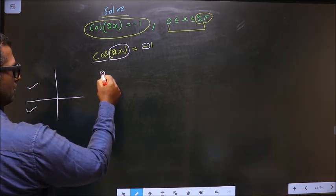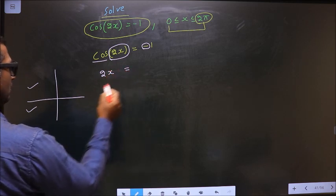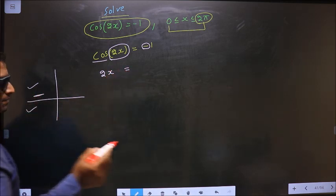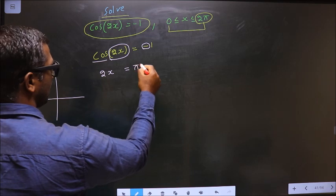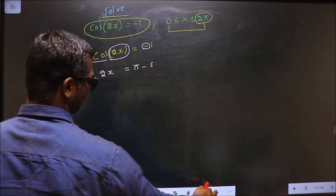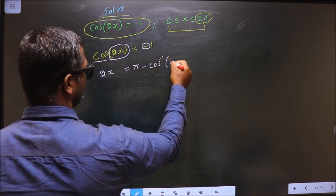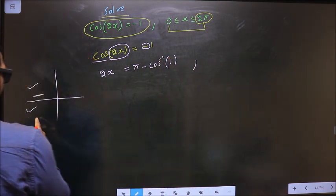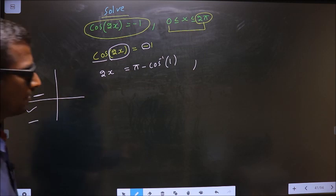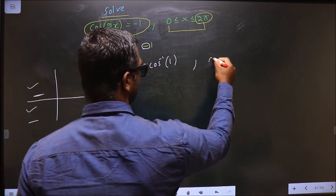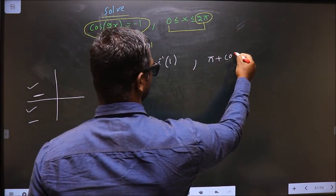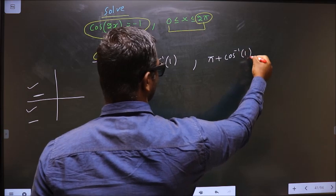So now, 2x equals: to get an angle in the second quadrant, we should do π minus cos inverse 1. To get an angle in the third quadrant, we should do π plus cos inverse 1.